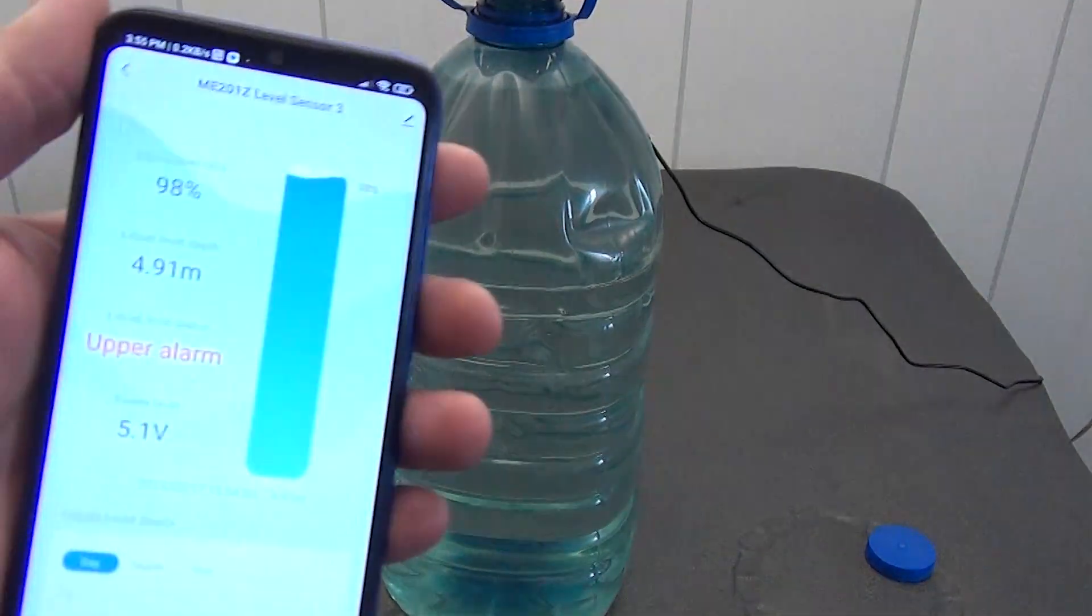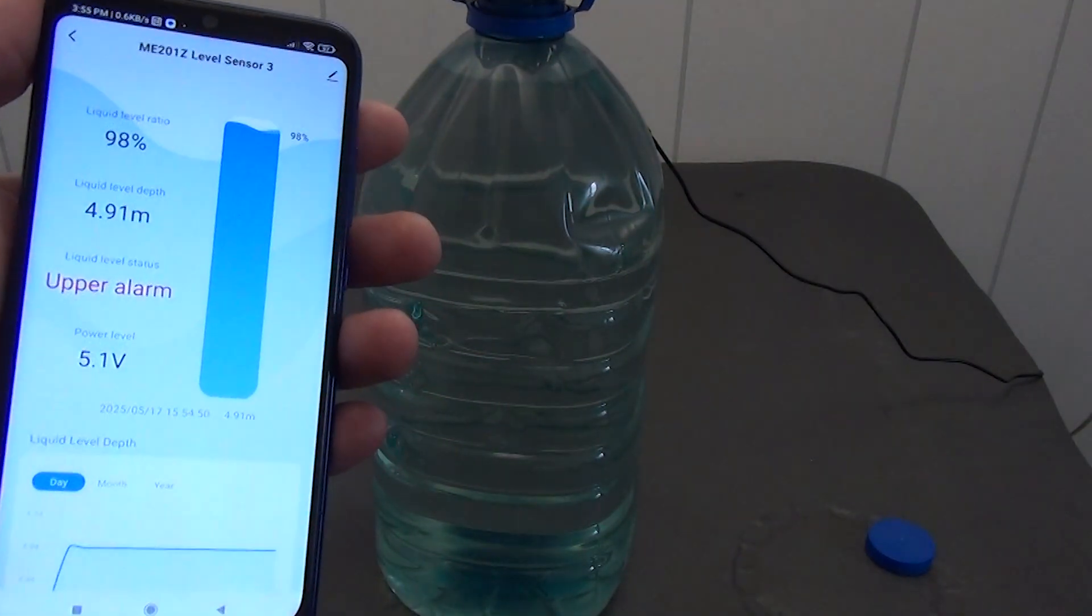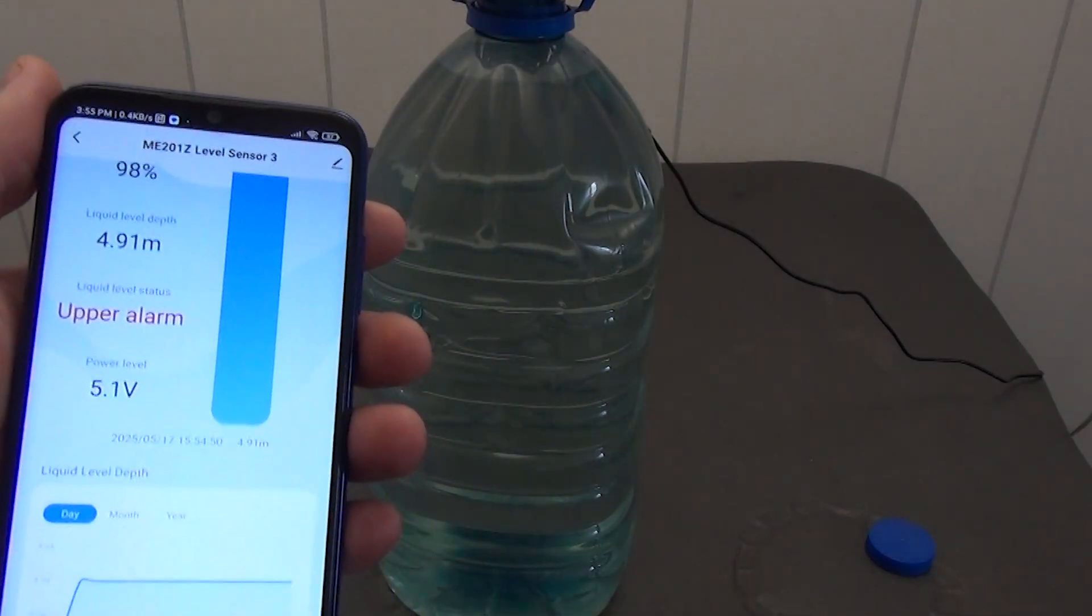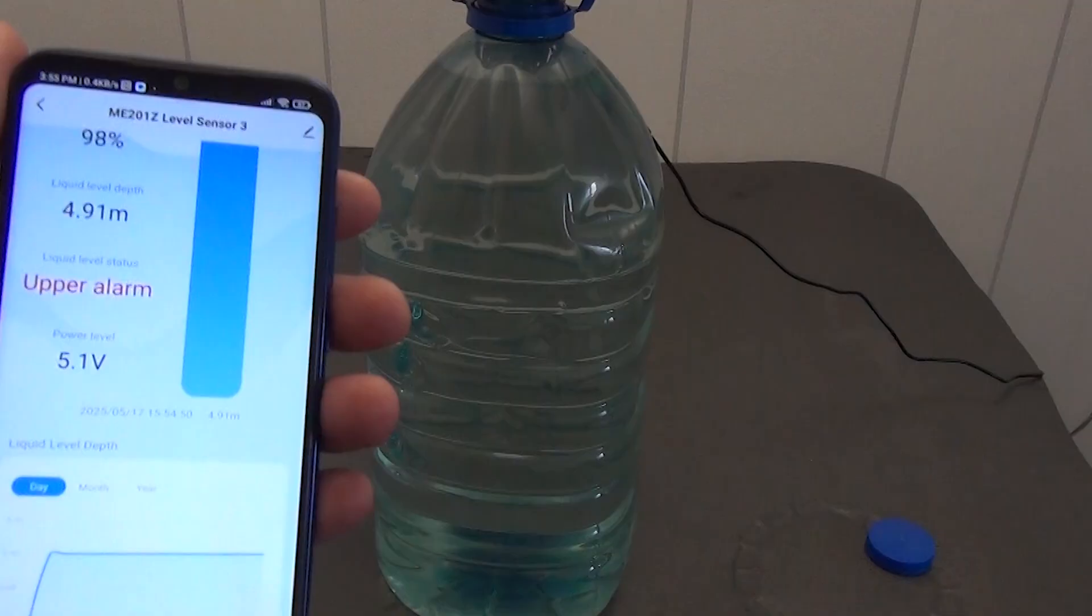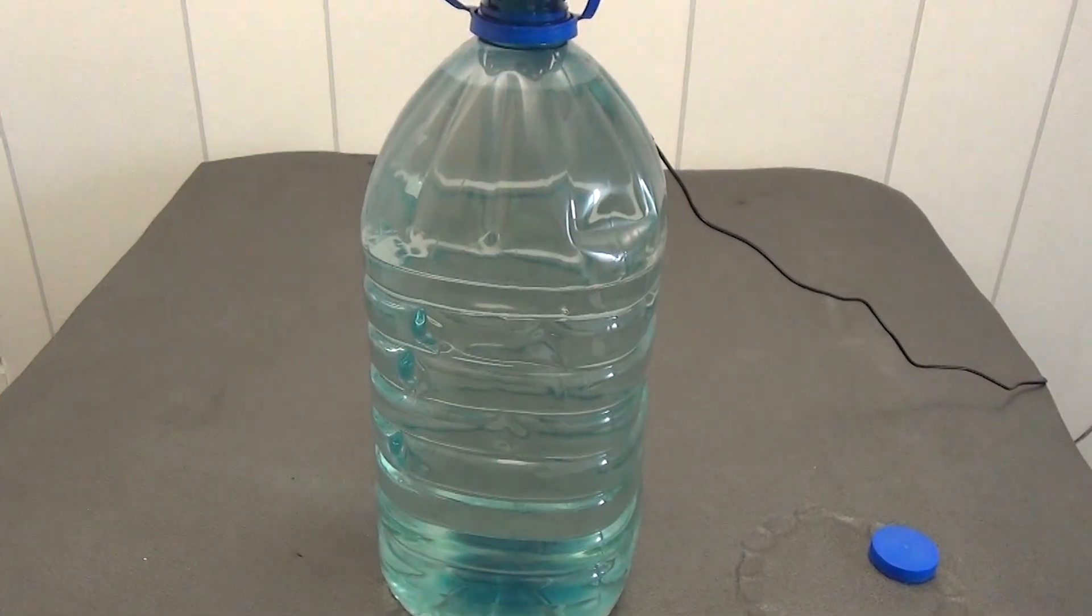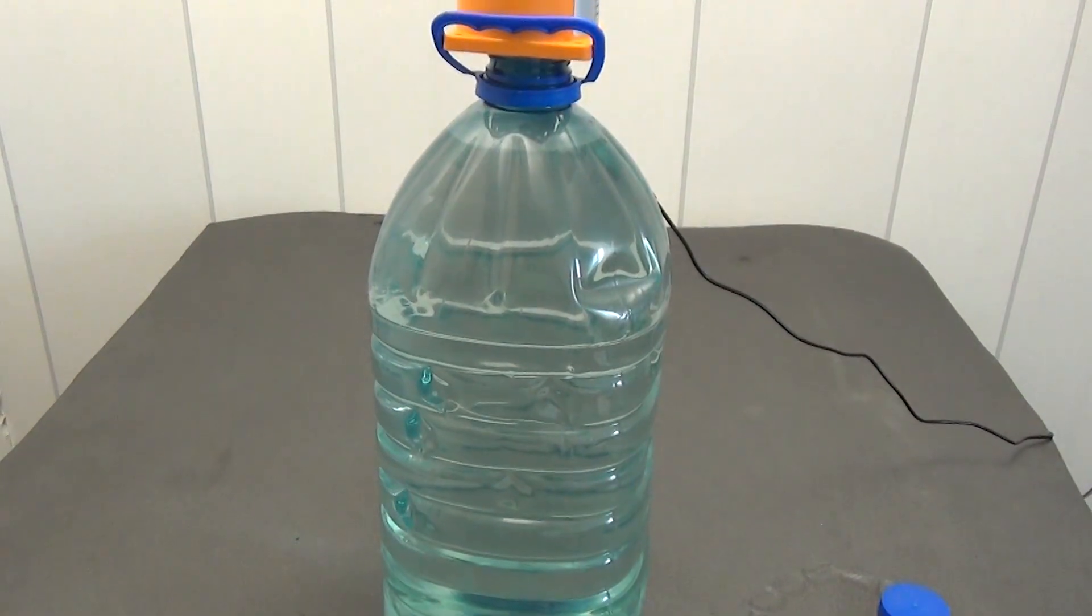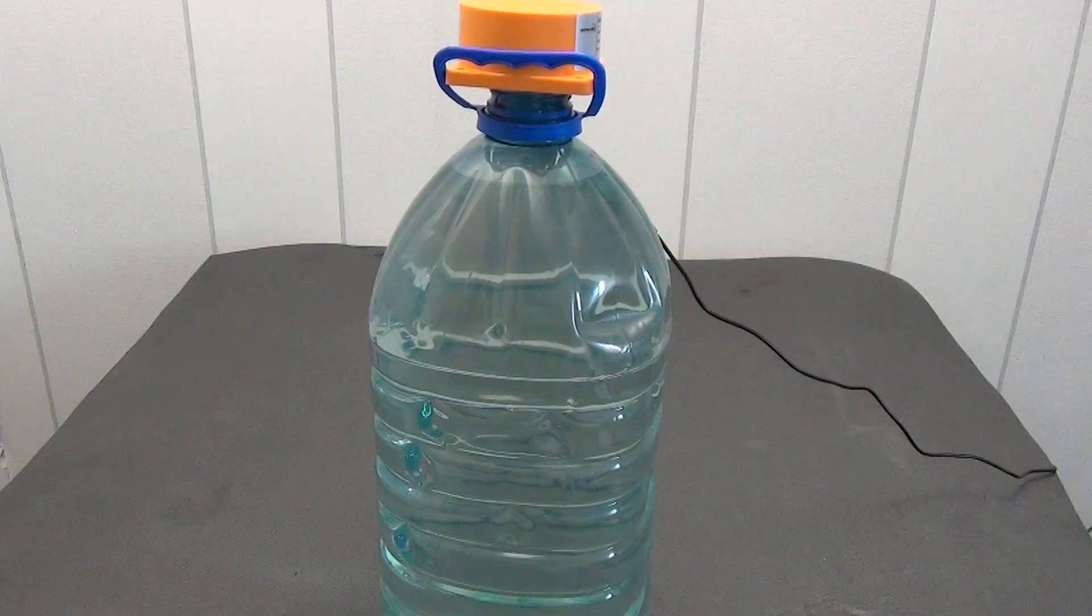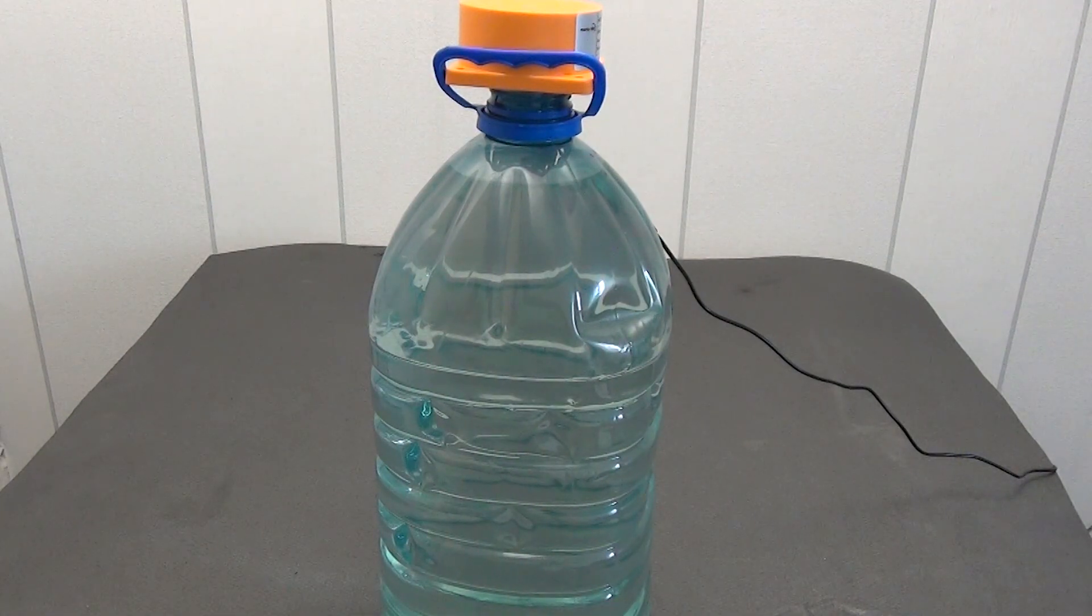It connects via Wi-Fi or ZigBee, as in my case, and is controlled through the familiar Tuya or Smart Life application and gives a complete picture right on the smartphone screen. In this video, we will figure out the installation, test it in action, check the capabilities of the Tuya smart application and the automation capabilities. Yes, of course, we will try to integrate it into Home Assistant. Let's go, it will be interesting.